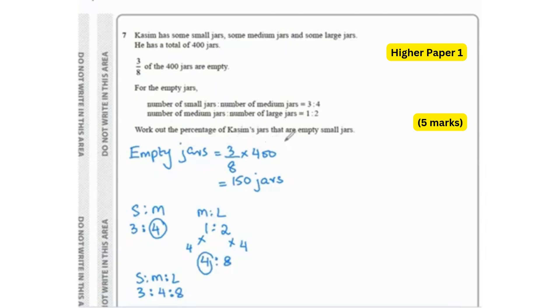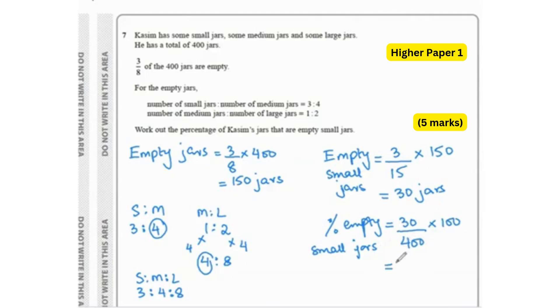Now, work out the percentage of Qasim's jars that are empty small jars. So empty small jars are going to be 3 over 15 because we add 3, 4 and 8, times 150, which is the total number of empty jars. That gives us 30 jars. So to find the percentage of empty small jars, I'm going to do 30 divided by 400, which is the total number of jars, times 100. And that is going to give me 7.5 percent. That's your answer.